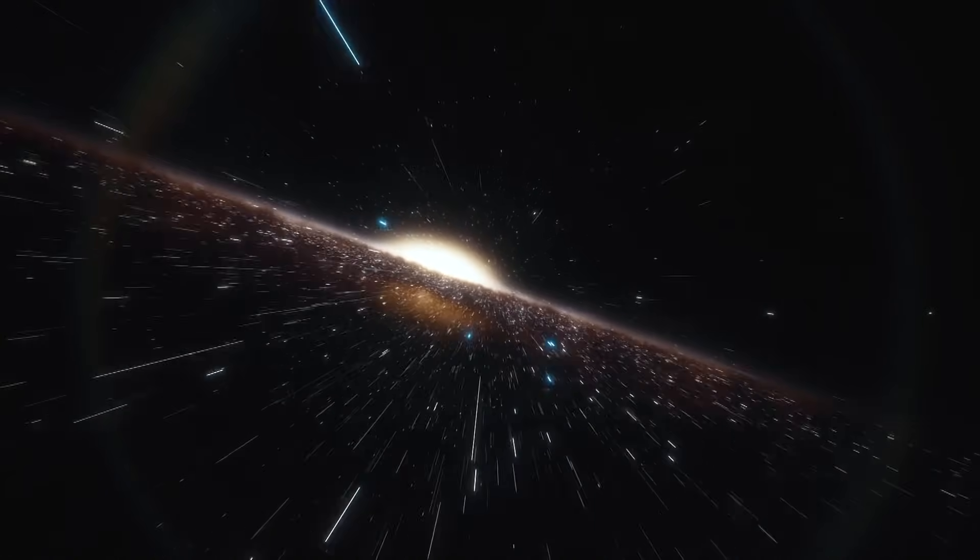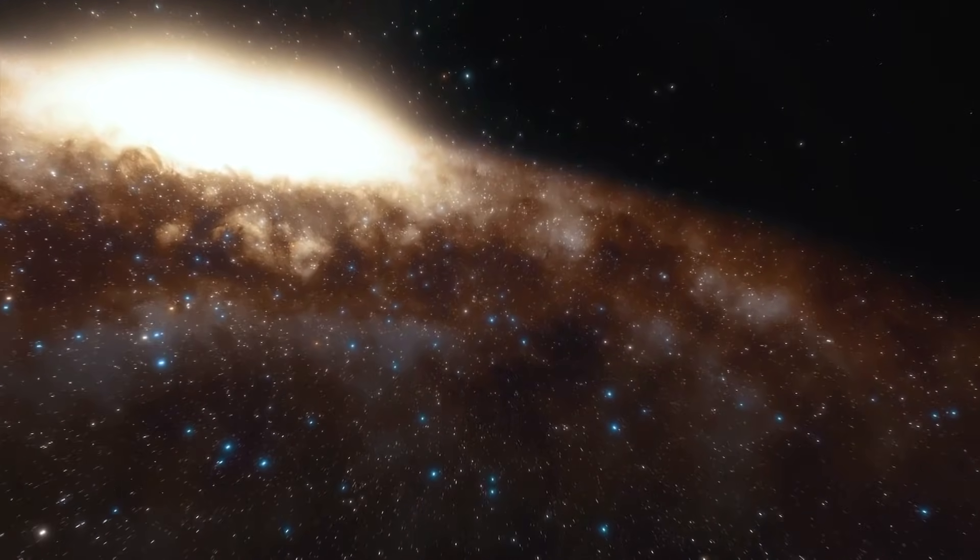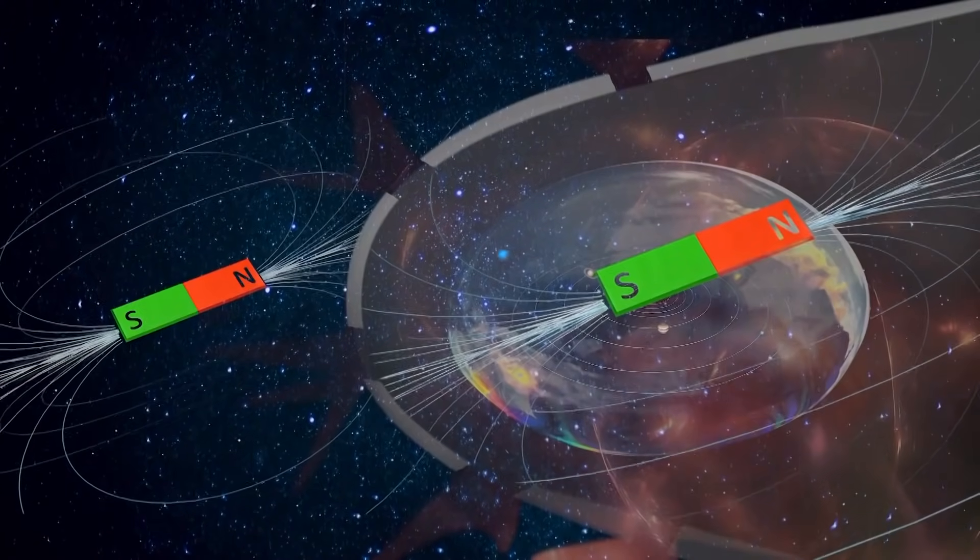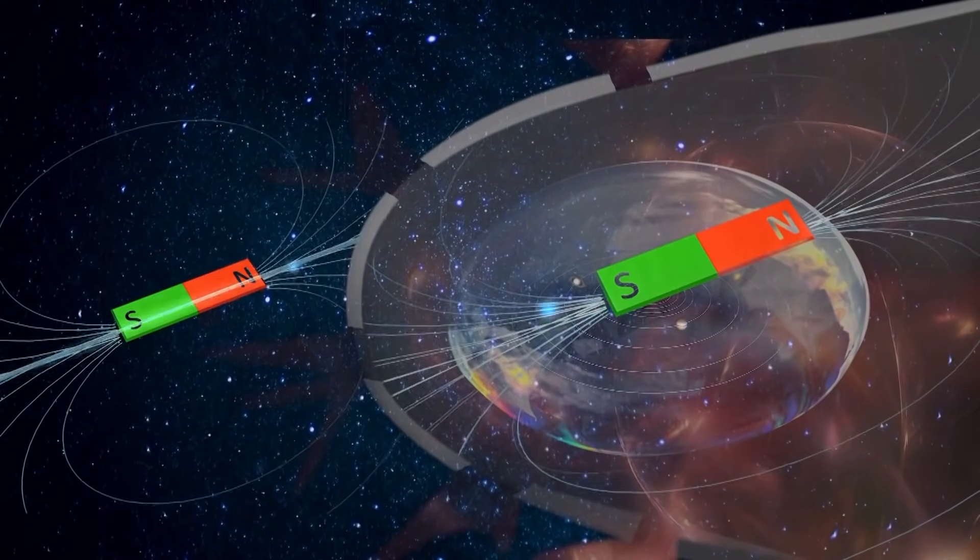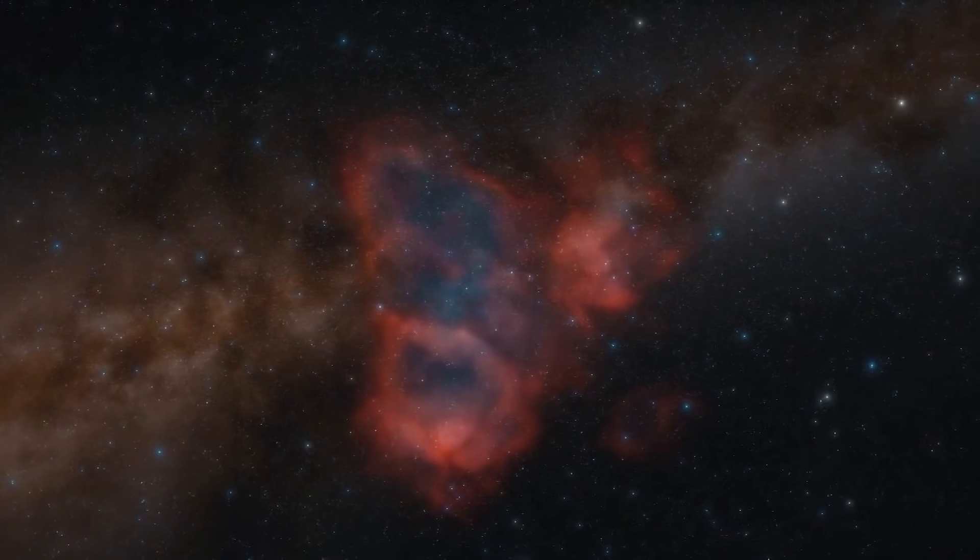There seems to be a currently unknown principle of cosmic magnetism that controls the behavior of magnetic fields in space. This is shown by the holes in the solar system bubble and the direction of magnetic fields at the border of the heliosphere and interstellar space.